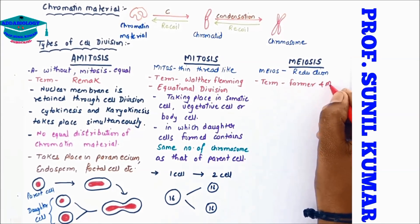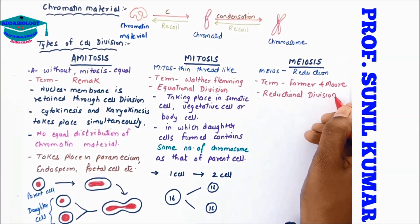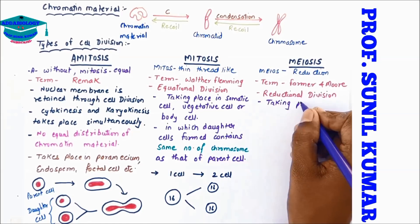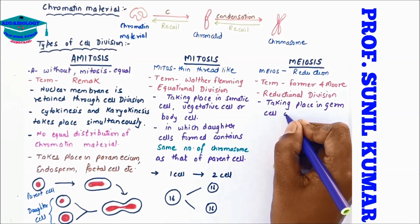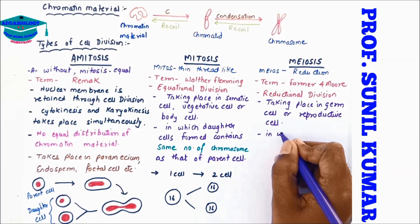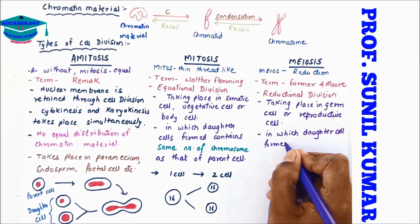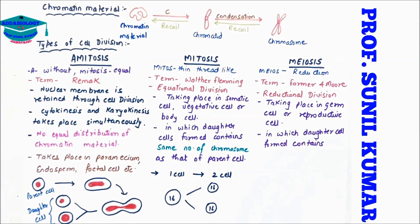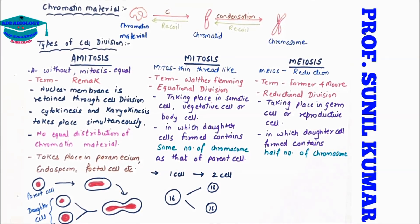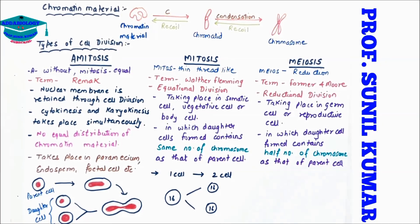Meiosis means reduction. The term was given by Farmer and Moore. Meiosis is a reductional division taking place in germ cells or reproductive cells, in which the daughter cells formed contain half the number of chromosomes as that of the parent cell.